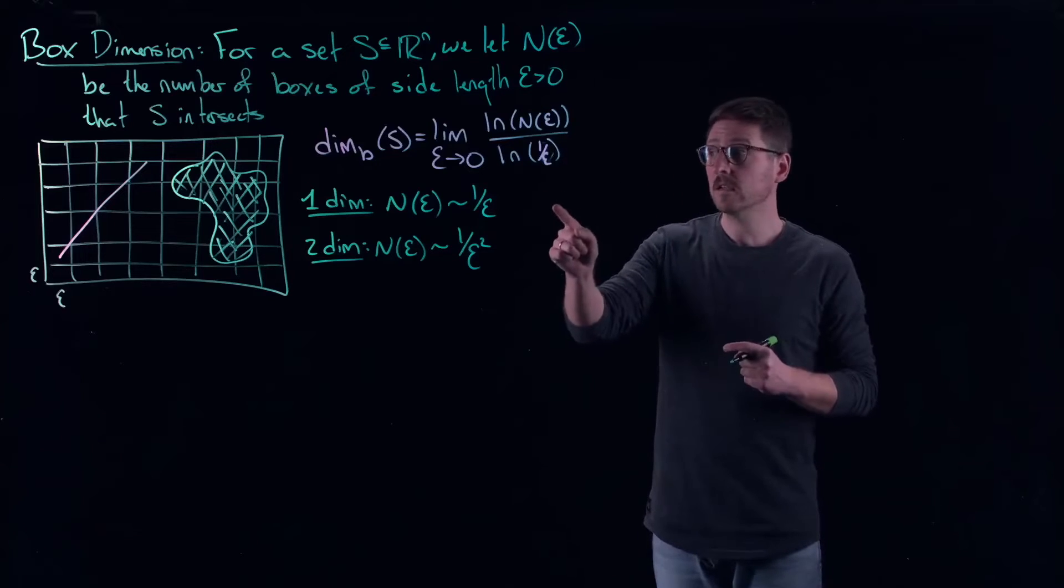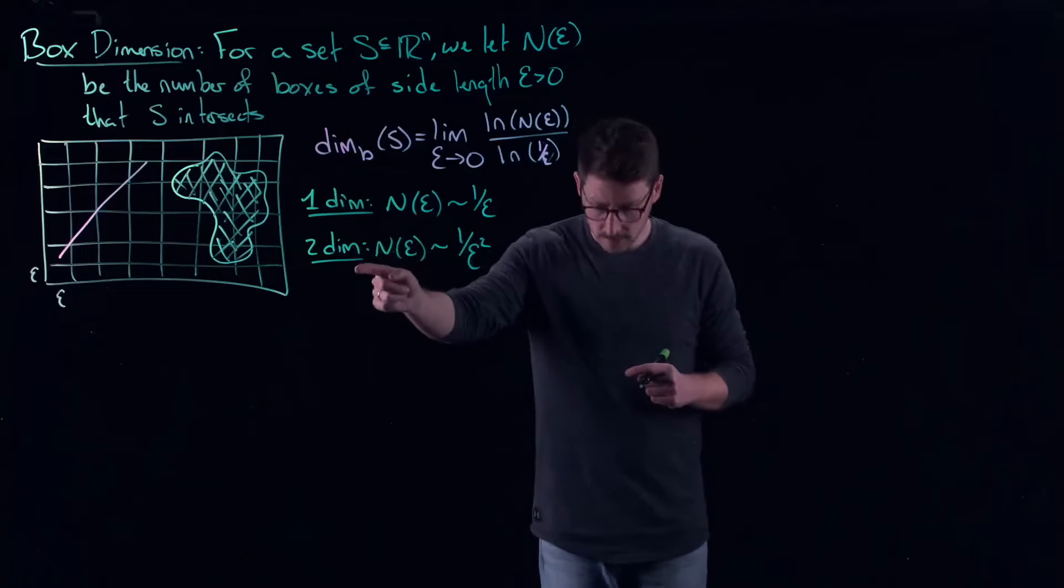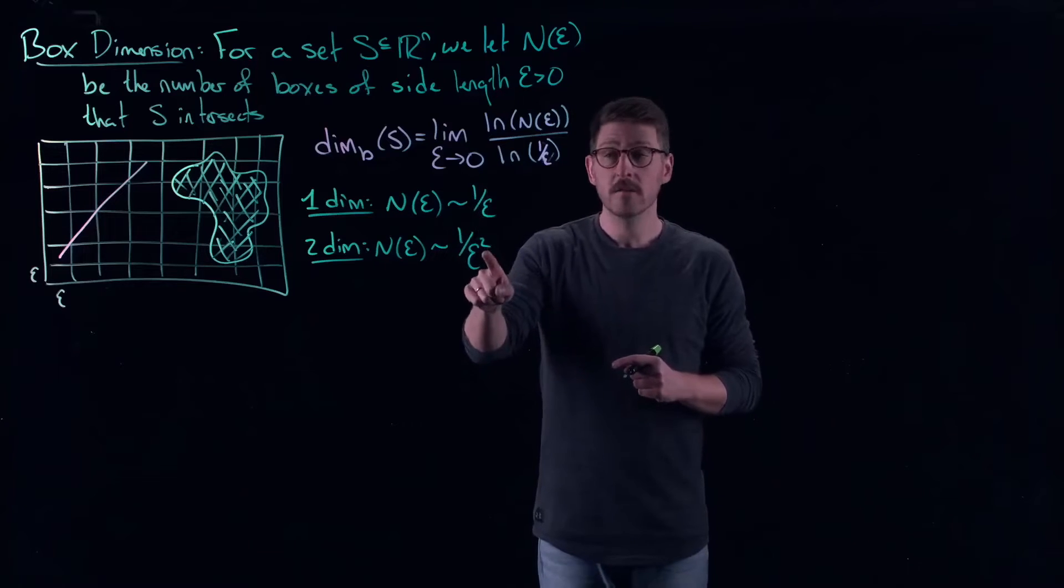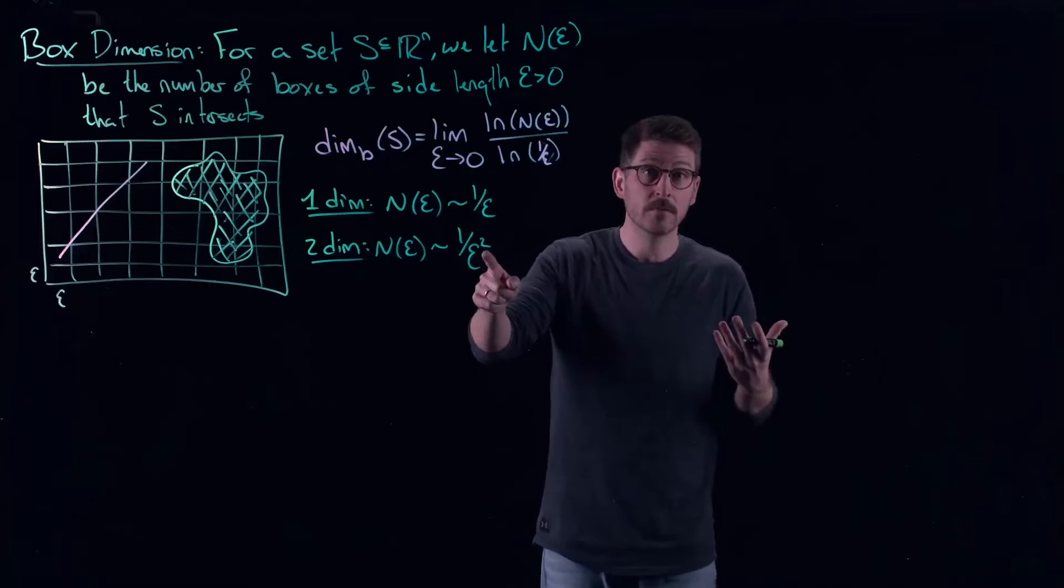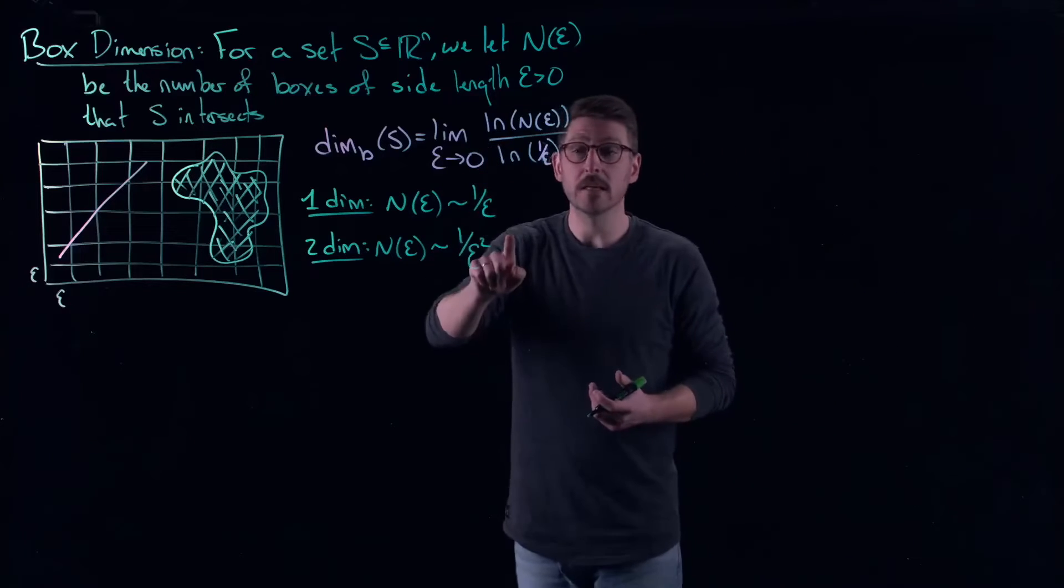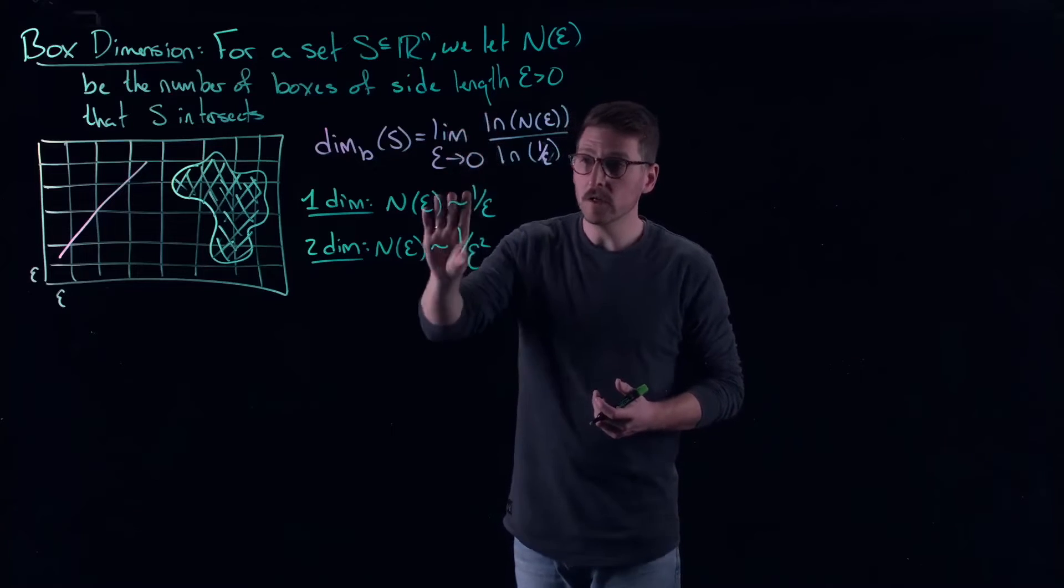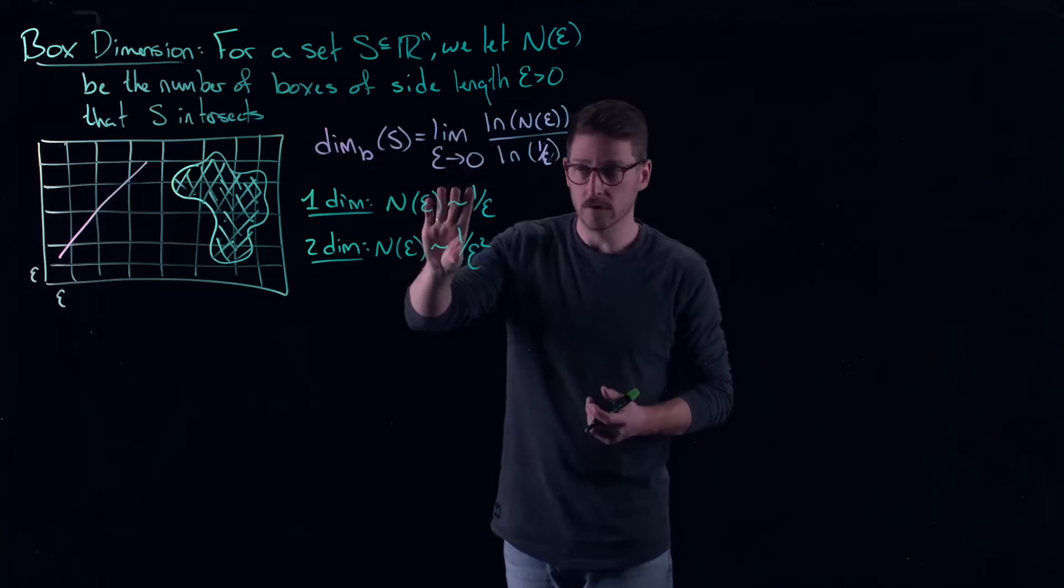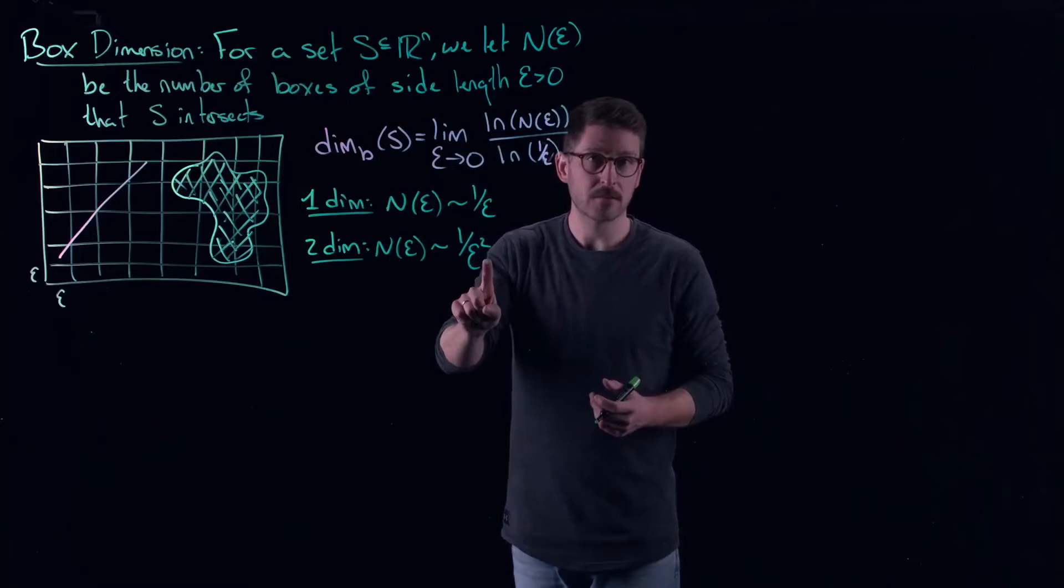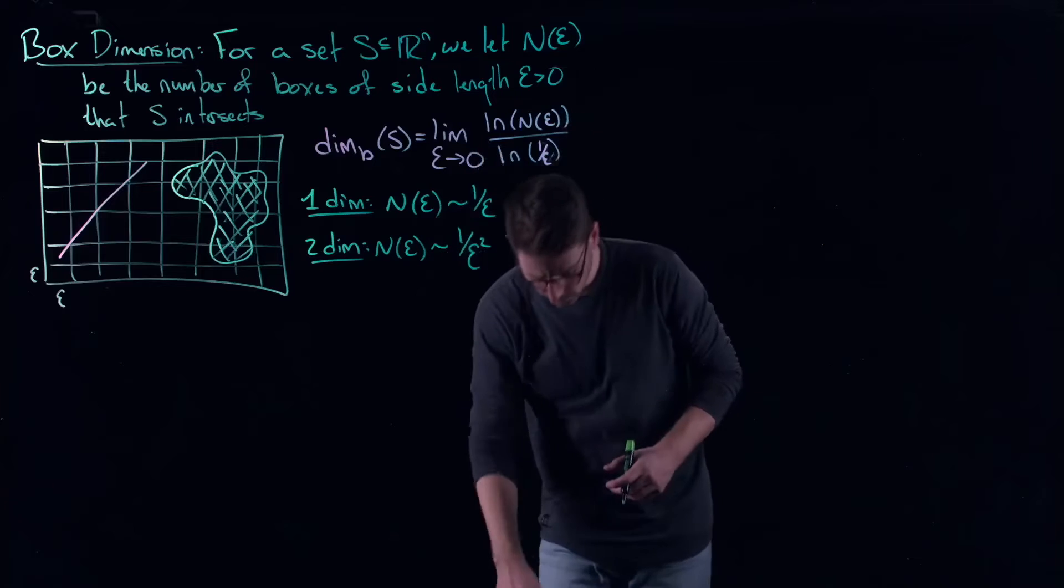But the nice thing about this is that you don't have to do this just for things with integer dimensions. This limit doesn't always have to give you a nice integer, it could have a scaling law, that say, three over two, or π. That is sort of what we're seeking out here, this limit right here is sort of looking for a scaling coefficient, how does the number of boxes grow as ε gets smaller? That's the question here. And these power law scalings are exactly what we're looking for.